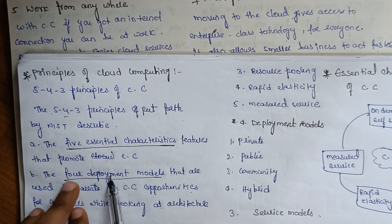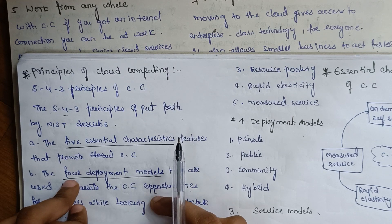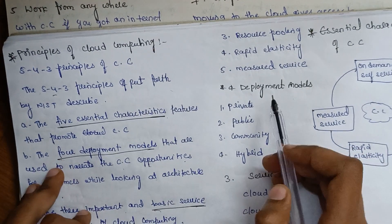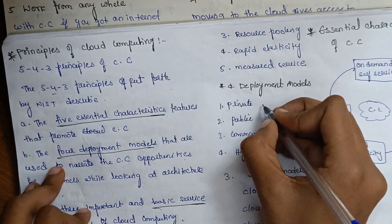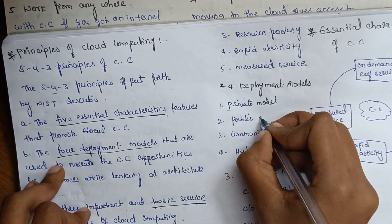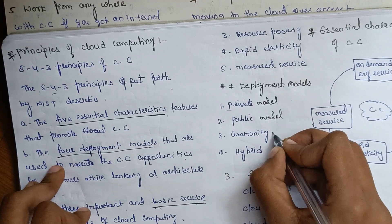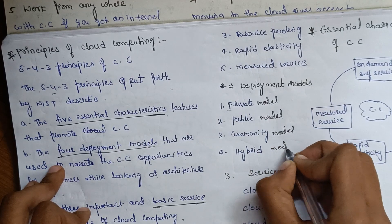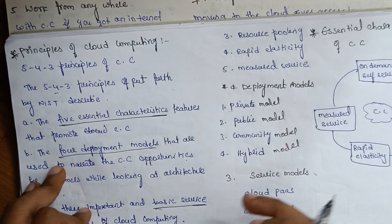The 4 deployment models are: private model, public model, community model, and hybrid model. These are the 4 deployment models in cloud computing.